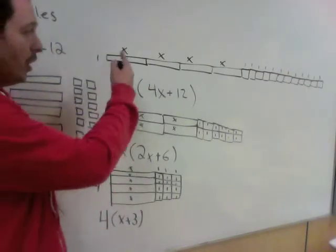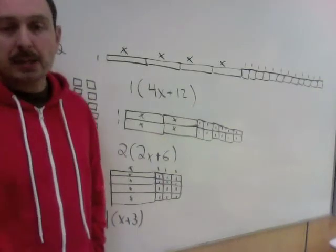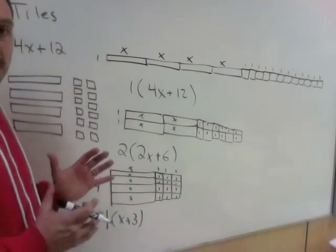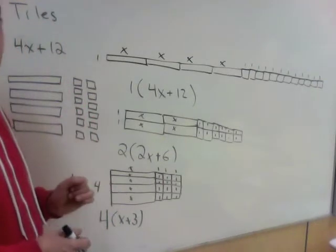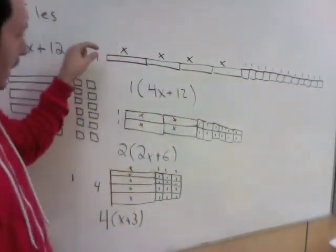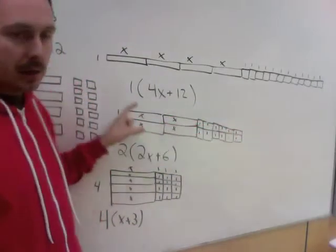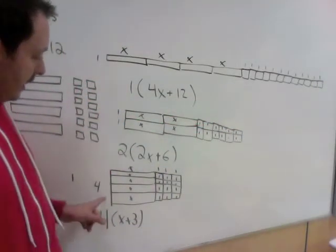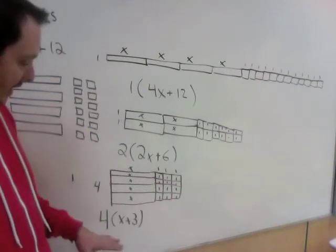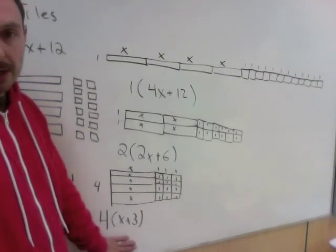Now these are all factors, but which is our best answer? Your best answer is always the rectangle that's closest to a square shape. The first arrangement is really long and narrow, the second is not quite as long, but the third — 4(x + 3) — is the most like a square, and that's how we know it is the most factored of all our rectangles.